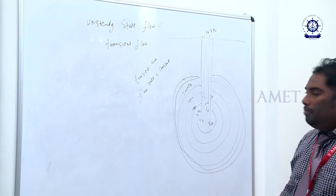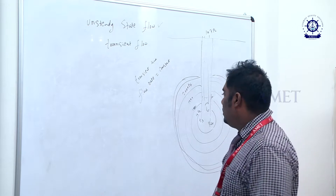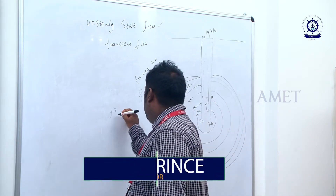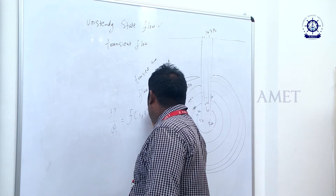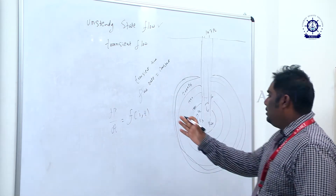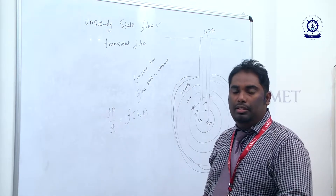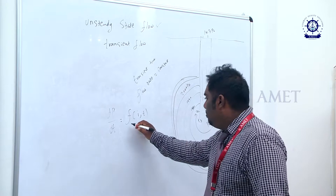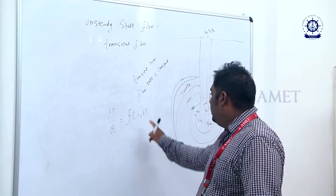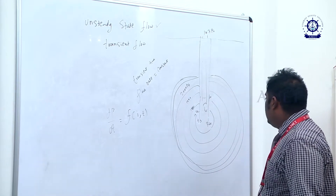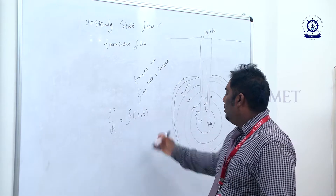Whenever time changes, pressure will change. At different locations, pressure will also change. That means ∂p/∂t is equal to a function of location and time. The change in pressure ∂p/∂t with respect to time is dependent on i, which represents location, and t, which represents time.